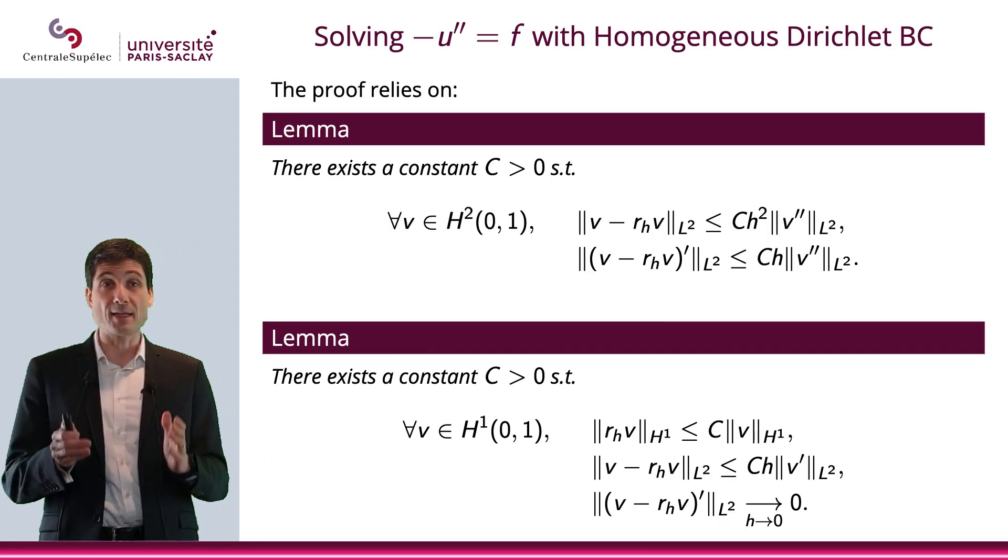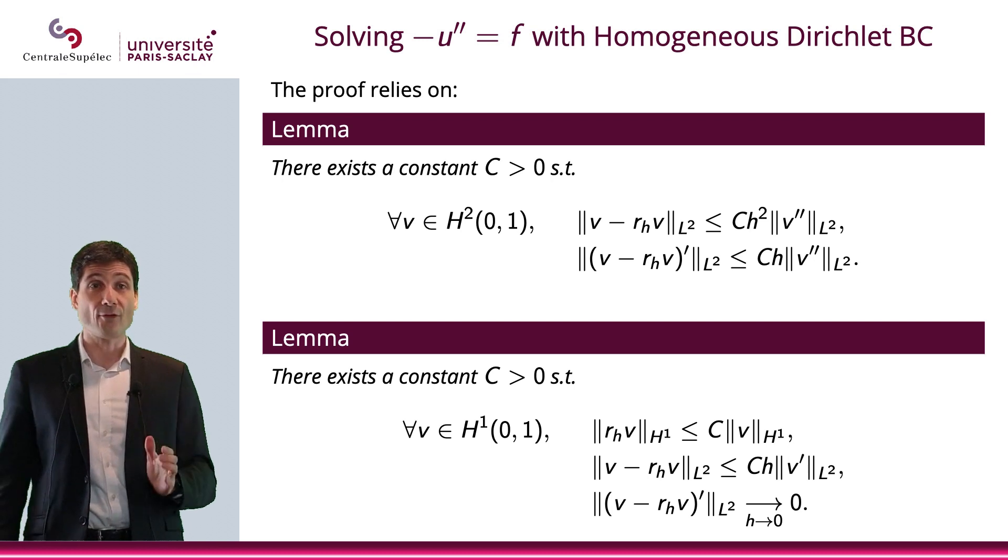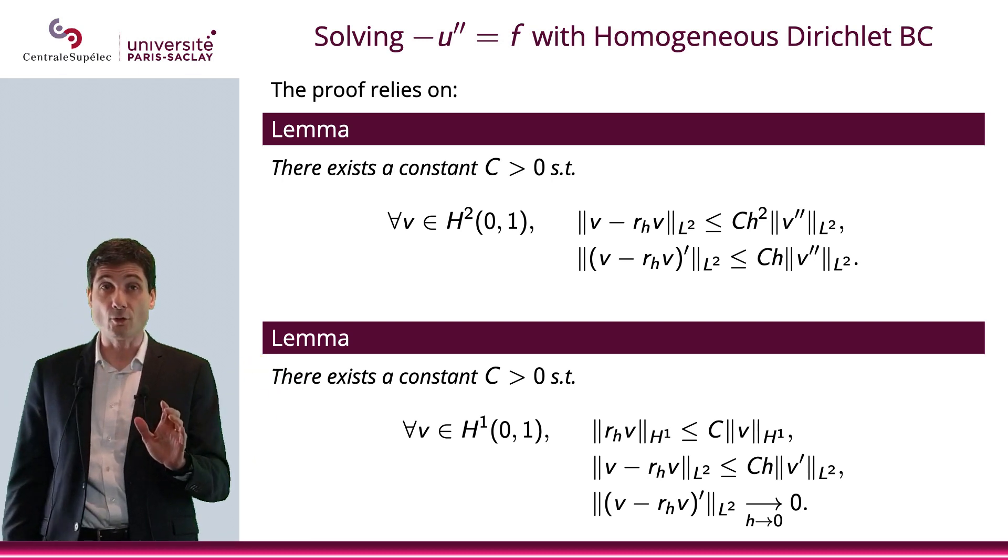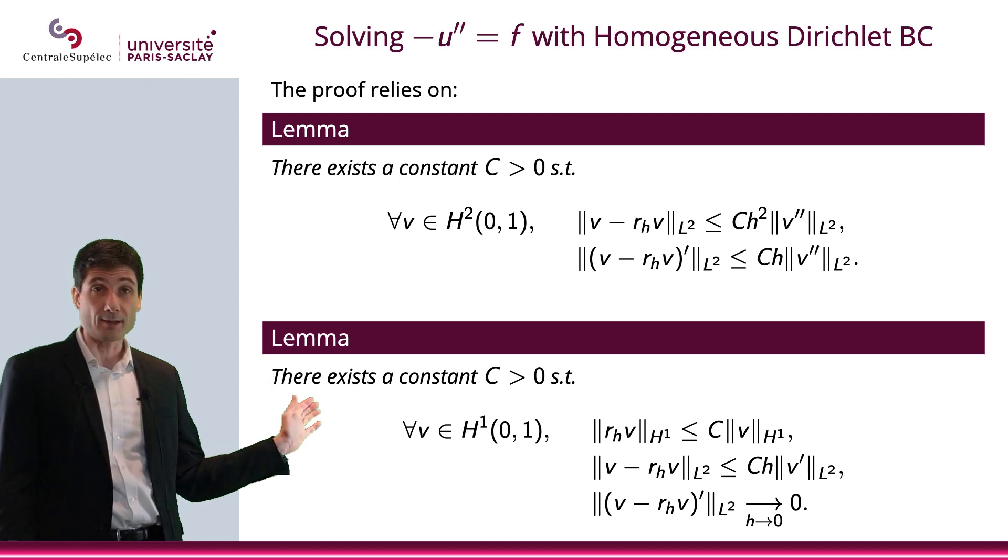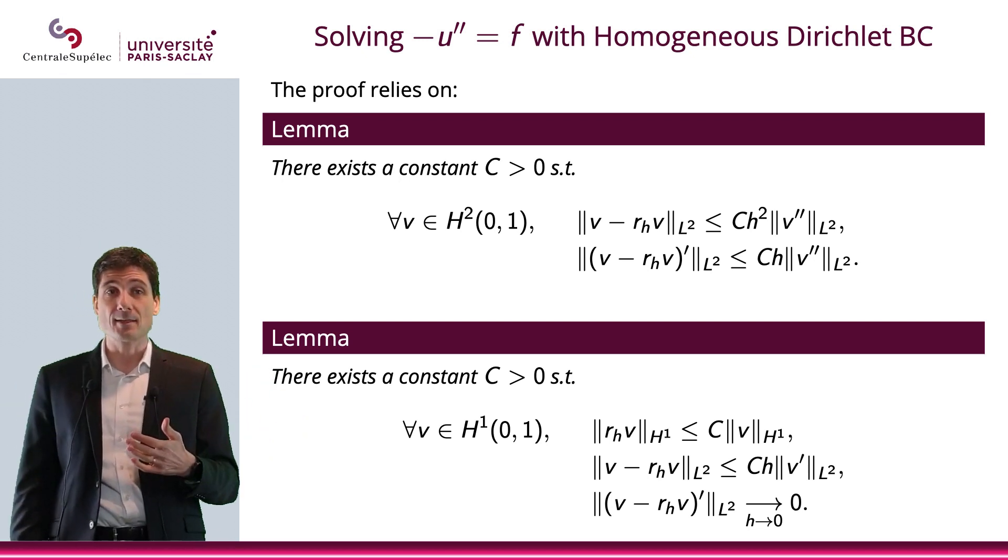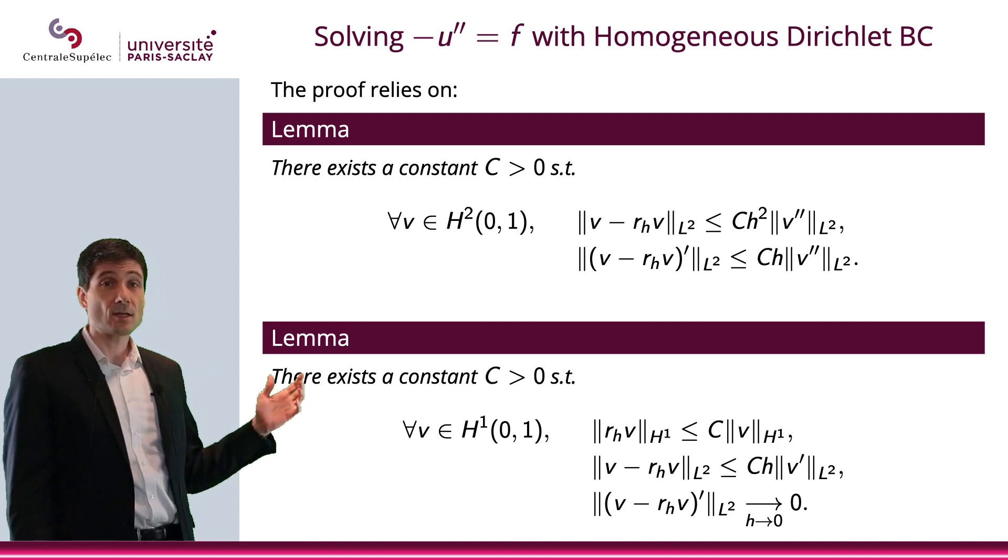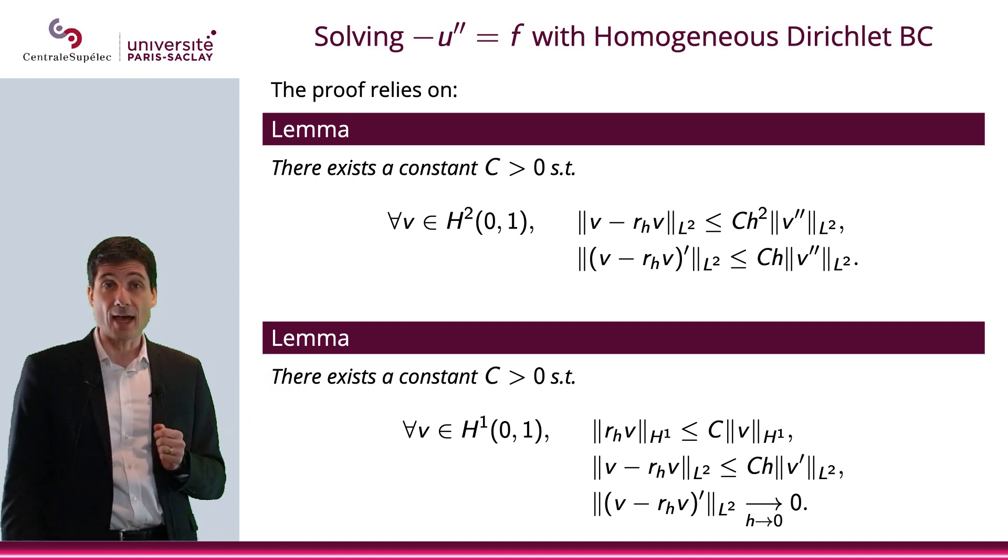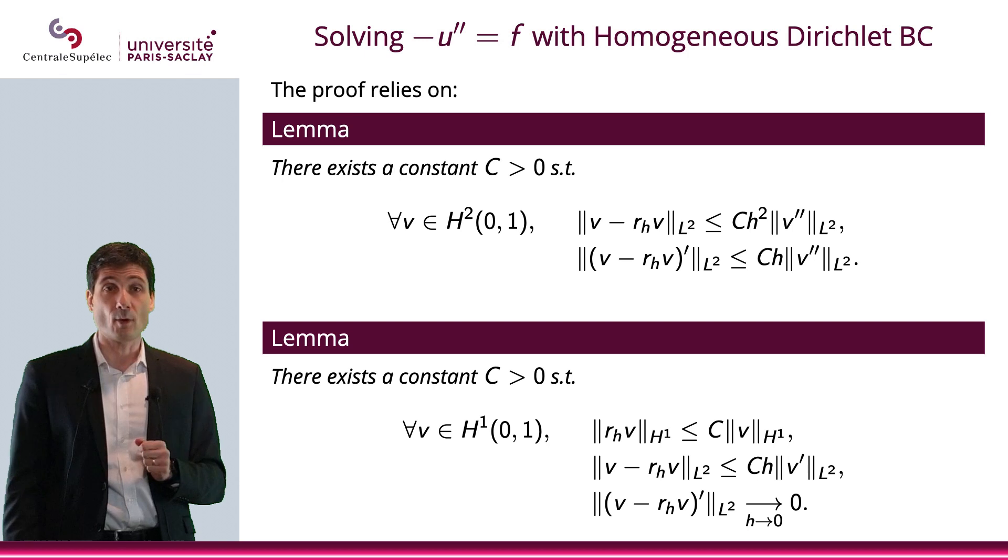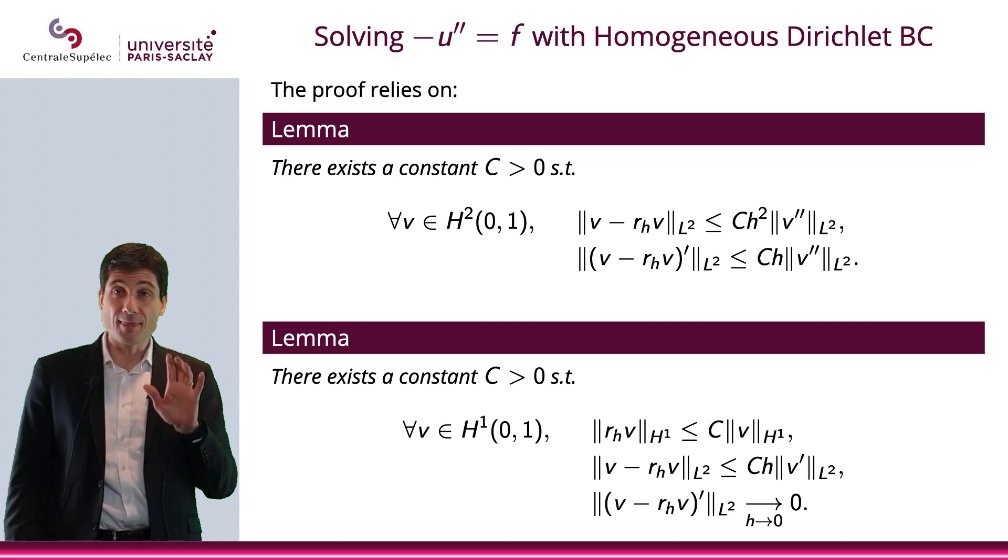Now, to prove this theorem, you basically use two lemmas. The first one is the existence of a constant c such that for all v in H^2 you have this inequality, these inequalities. And the second lemma is the existence of a constant c such that for all v in H^1 you have these inequalities and you have this limit when h goes to 0.